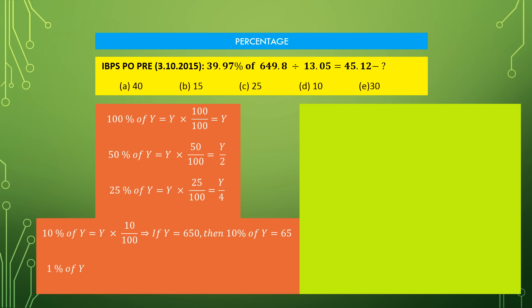Similarly, we can calculate 1% of Y as Y into 1 by 100. For example, if Y is equal to 650, since we are calculating 1%, we shift the decimal two places, so 1% of Y will be equal to 6.5. You should remember these five values: 100% of Y equals Y; 50% of Y equals Y by 2; 25% of Y equals Y by 4; 10% of Y means put a dot after the unit digit; 1% of Y means put a dot after the tens digit.